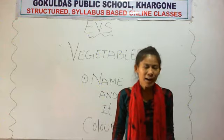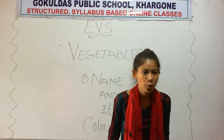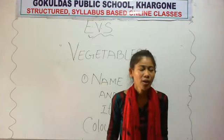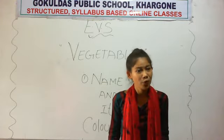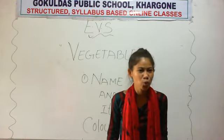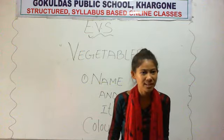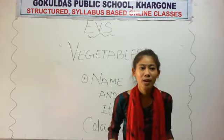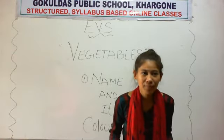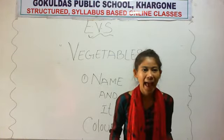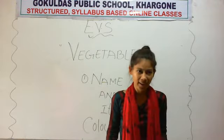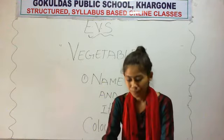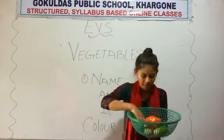Dear parents, always show them the real vegetable. You can take a vegetable from the kitchen and show them the real vegetable. You can ask the vegetable name and color also. They are learning three things: vegetable category, vegetable name, and color.